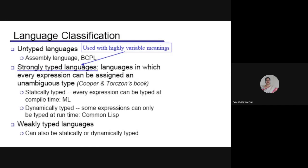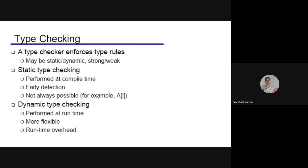Type checking: a type checker enforces type rules using the type system. It checks whether the language is using static or dynamic checking and whether it is strong or weak. Static checking is performed at compile time, provides early detection, but is not always possible with aggregated data. Dynamic type checking is performed at runtime, is more flexible, but incurs runtime overhead since type is determined based on user-entered data.